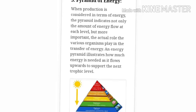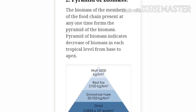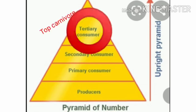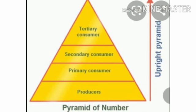Biomass means the living matter in plants or animals. The producers form the base of the triangle and the top carnivores form the tip of the pyramid. The pyramid of numbers is a graphic, stepwise representation of the number of individuals present at each trophic level, with producers at the base and top carnivores at the top. The pyramid of numbers is mostly upright.